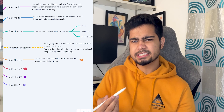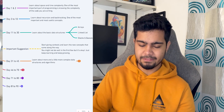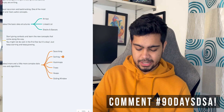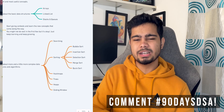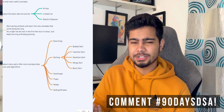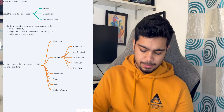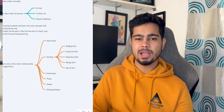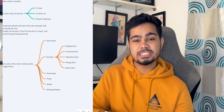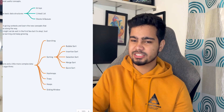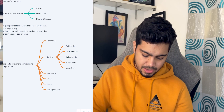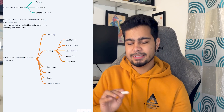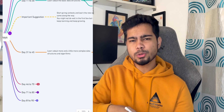Day 31 to 45 is very important — you will cover more complex data structures and algorithms. You need to learn searching and sorting: binary search and linear search, with binary search being especially important for interview questions. For sorting, learn bubble sort, insertion sort, selection sort, merge sort, and quick sort — especially merge and quick sort. After that, do linked lists, hash maps, trees, heaps, and sliding windows. You can cover all of this in around 15-20 days.